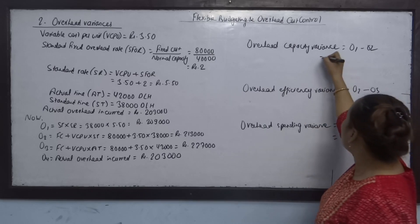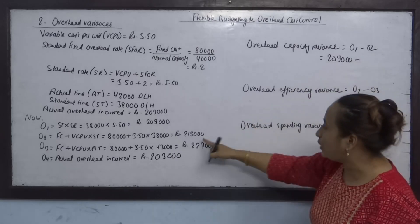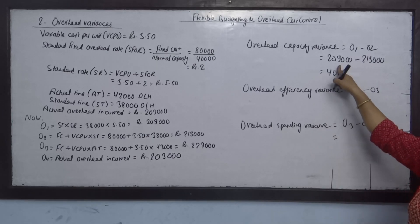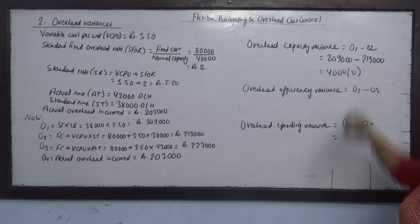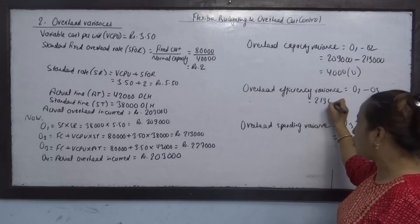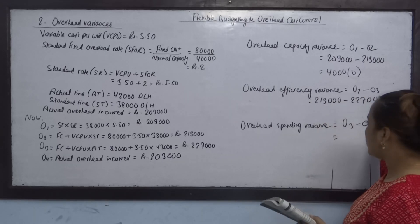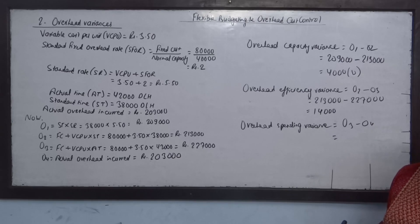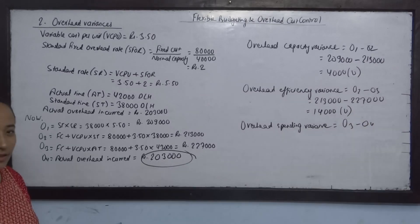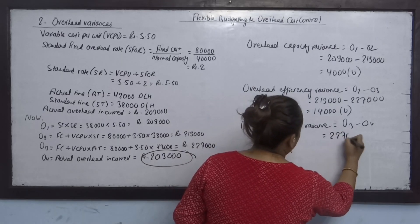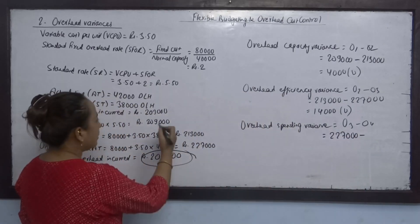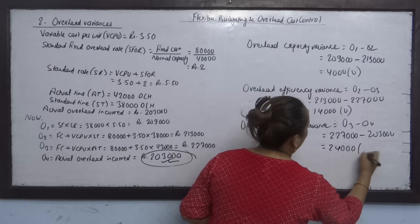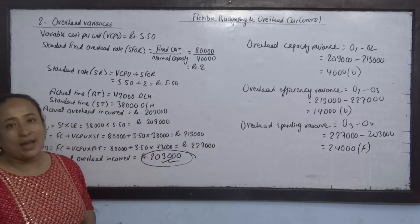Capacity variance: O1 minus O2 equals 2,09,000 minus 2,13,000 equals negative 4,000 — this is unfavorable (U). Efficiency variance: O2 minus O3 equals 2,13,000 minus 2,27,000 equals negative 14,000 — unfavorable. Spending variance: O3 minus O4 equals 2,27,000 minus 2,30,000 equals positive 24,000 — favorable (F).